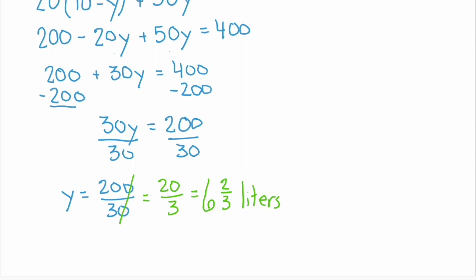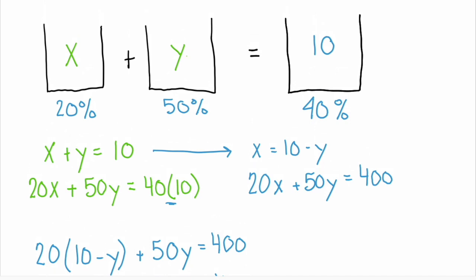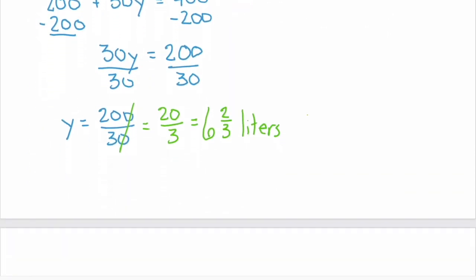And if you look back at our buckets, y is the 50% solution. So we need six and two thirds liters of 50%. So how many liters of 20% do we need? Well, together, they need to be 10 liters. So six and two thirds plus what gives us 10? Well, we need a third, because then we have two thirds plus one third, which is one. So we'd have seven total liters. And we need three more. So we need six and two thirds liters of 50% acid, and three and one third liters of 20% acid. Mix those together, and you'll end up with 10 liters of 40% acid.